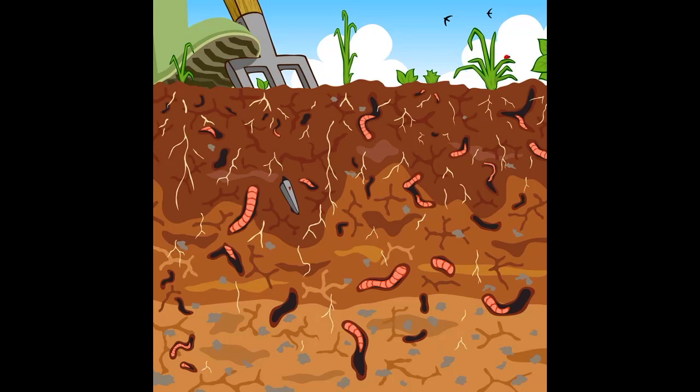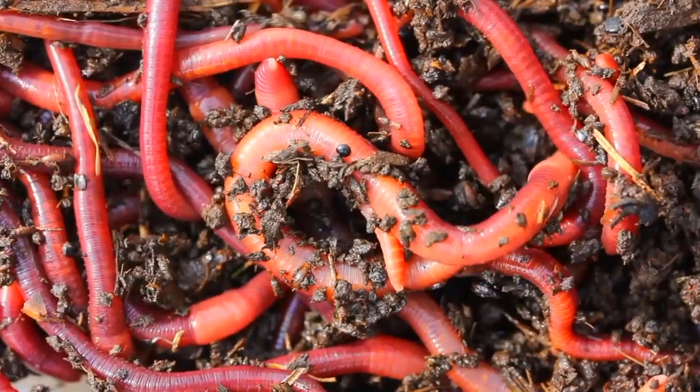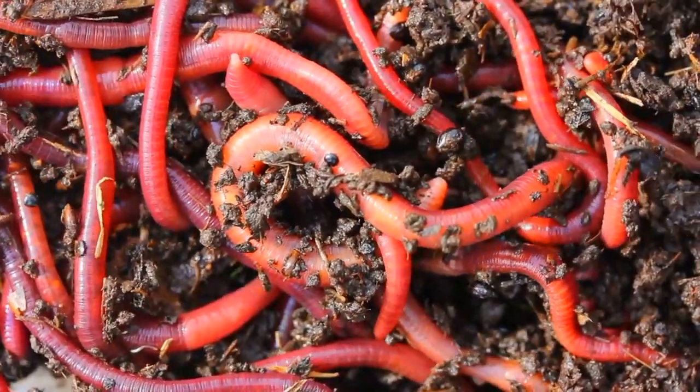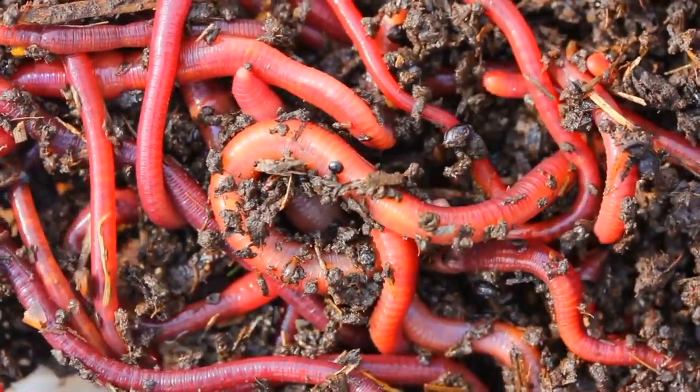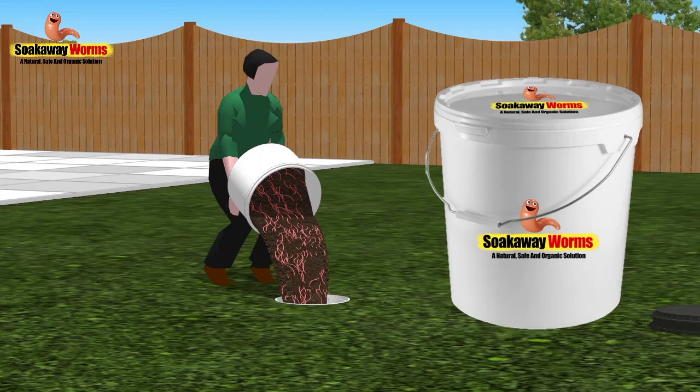Soakaway worms will not only unblock your soakaway from all the fat and the grease and the sludge, but they'll also keep it clean, preventing your septic tank and soakaway from ever developing problems again. Soakaway worms come in a large bucket. Simply take the lid off the bucket and tip the entire contents into the septic tank.